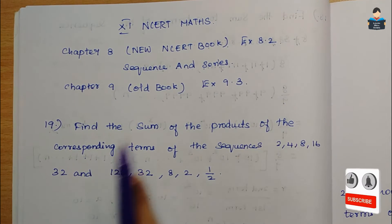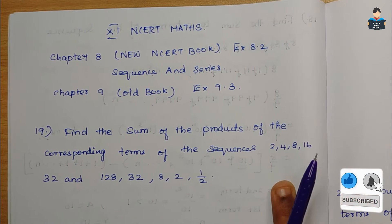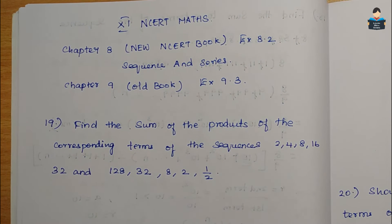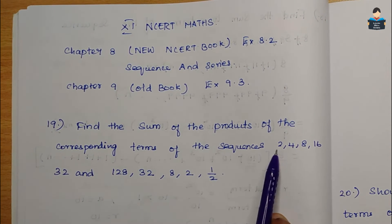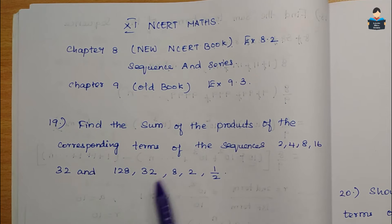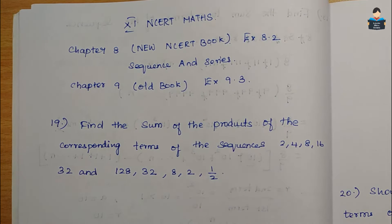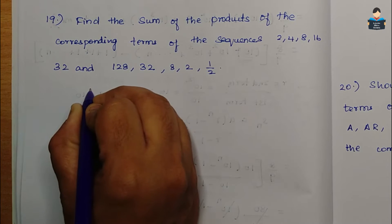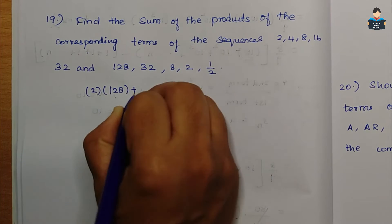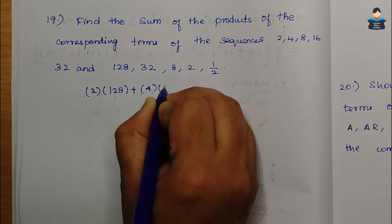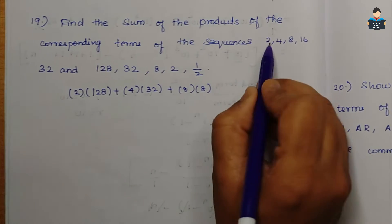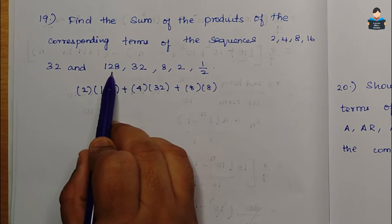We need to find the sum of the products of the corresponding terms. That means: 2×128 + 4×32 + 8×8, where each term from the first sequence is multiplied by the corresponding term from the second sequence.